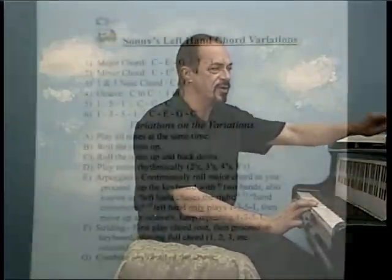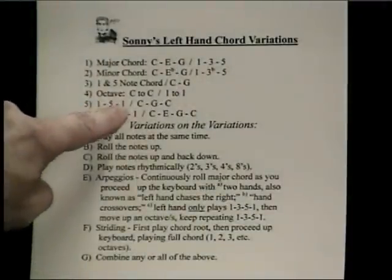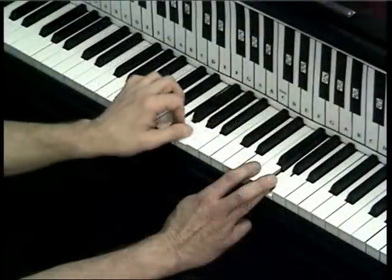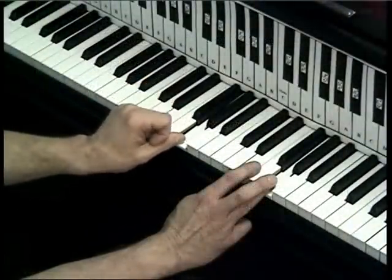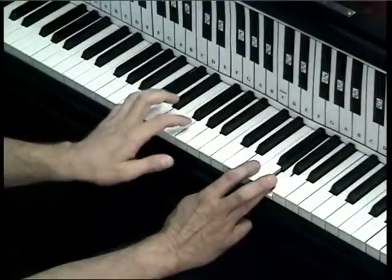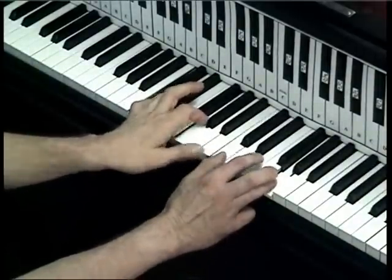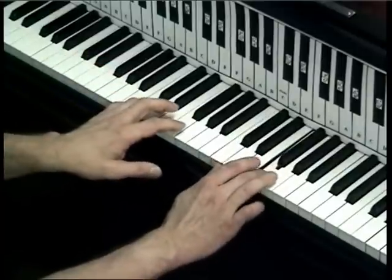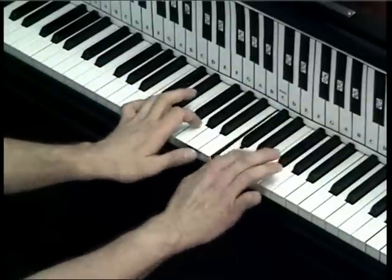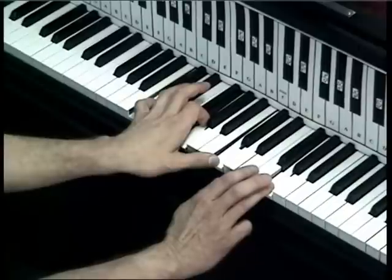Now another way of playing the chord is to play it as a 1, 5, 1. Let's look again: 1, 2, 3, 4, 5 — remember the last note of the chord is the 5 — so you've got 1, 5, and then a 1. That's another way of doing it: 1, 5, 1.